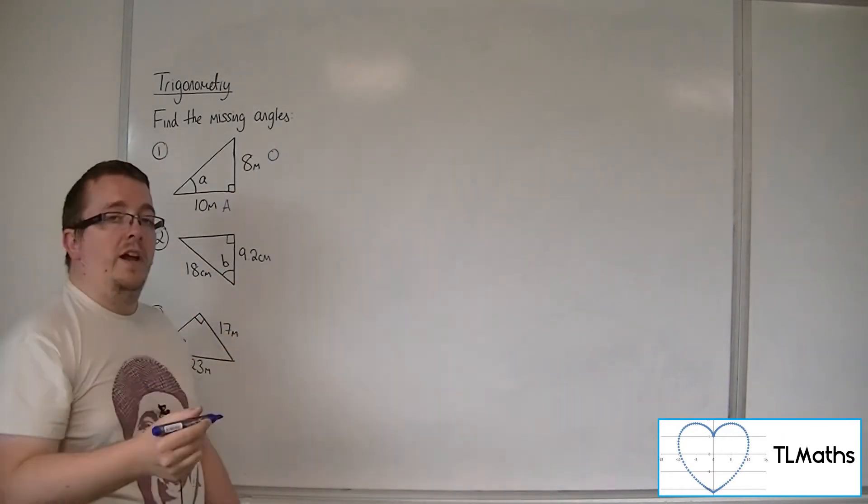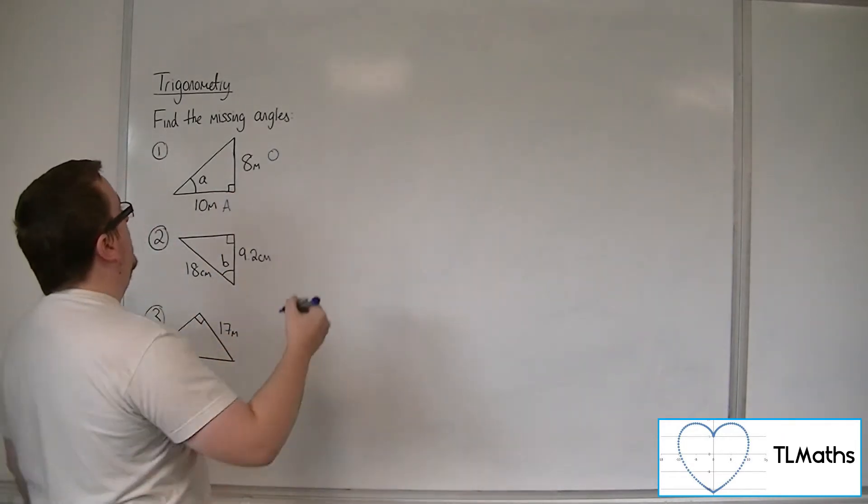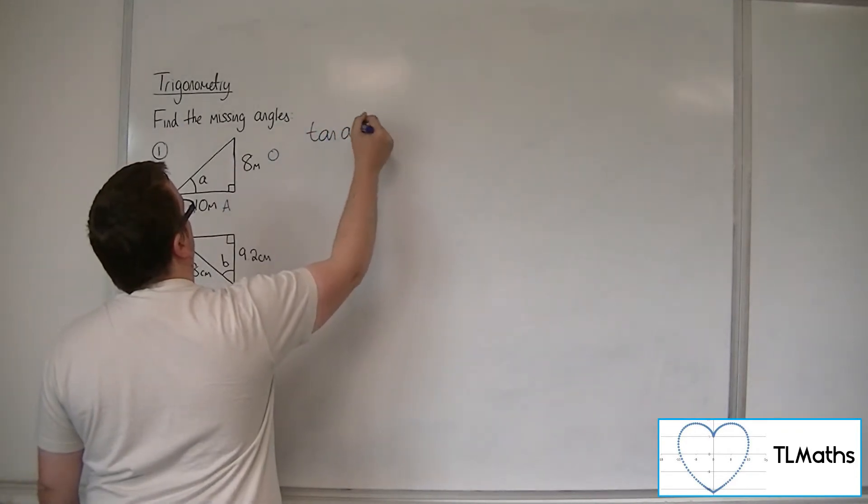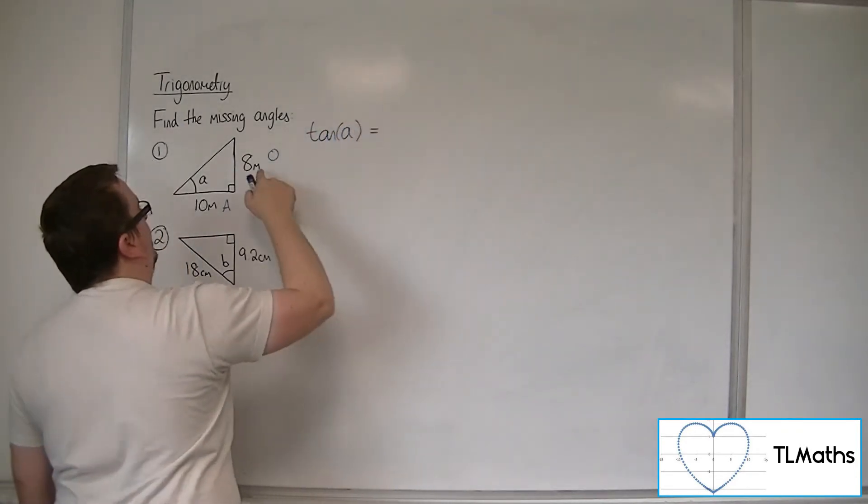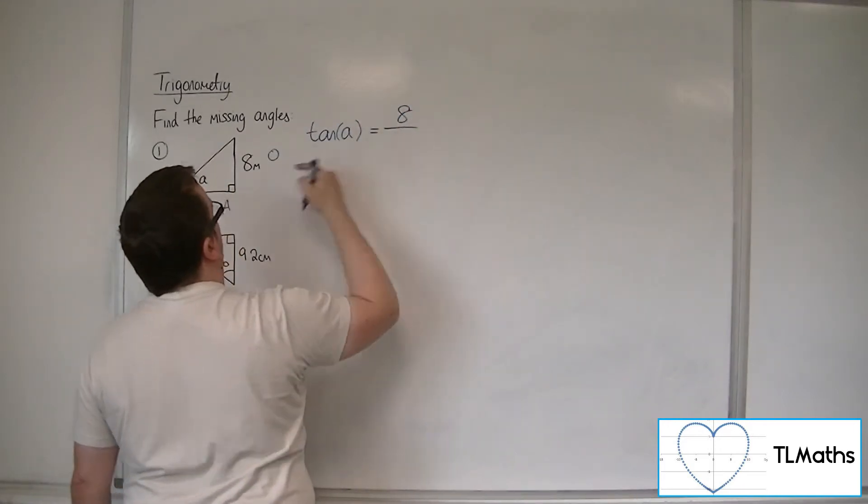So we know that we're going to have to use tan. So tan of the angle A is going to be equal to the opposite over the adjacent.